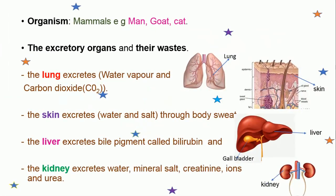Finally, let's talk about mammals. Examples include you, man, goat, and cat. The excretory organs include lungs, skin, liver, and kidneys. The lungs excrete water vapor and carbon dioxide. The skin excretes water and salt through sweat. The liver excretes a bile pigment called bilirubin. The kidney, which is the main excretory organ in the body of mammals, excretes water, mineral salt, creatinine, ions, and urea — which is a nitrogenous waste in liquid form. These are the organs of excretion in mammals.